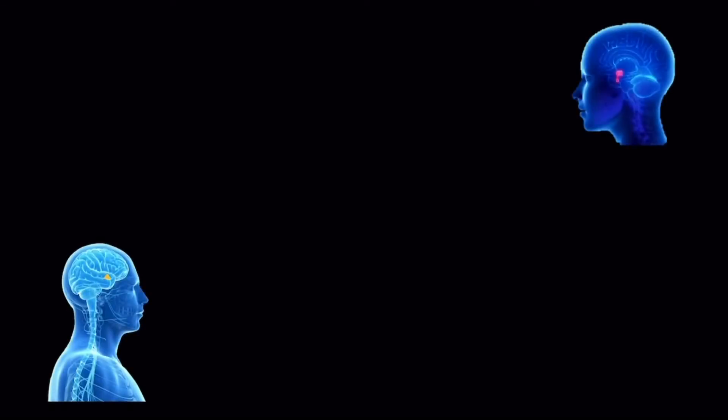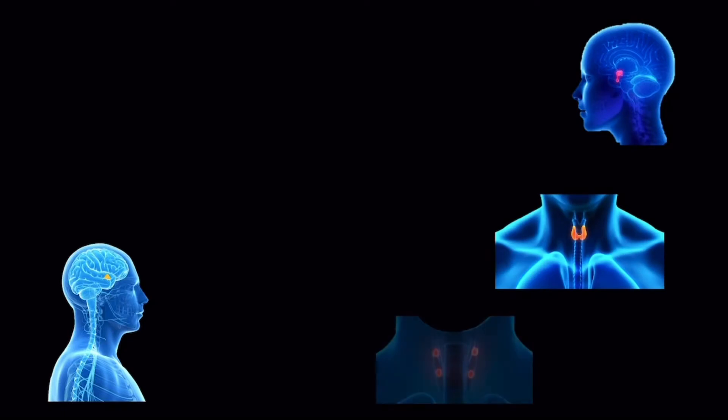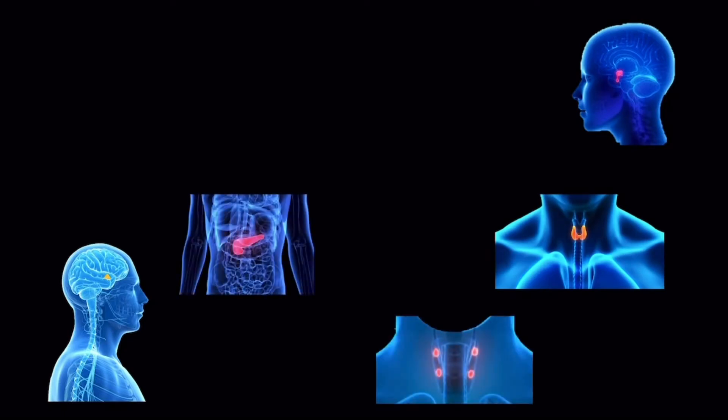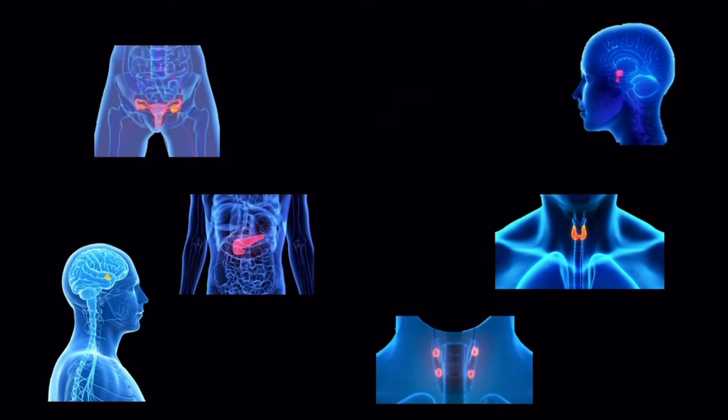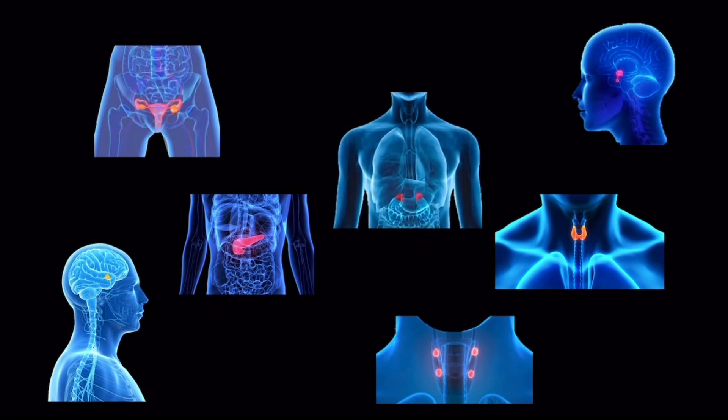The main hormone producing structures in the body are the hypothalamus, pituitary gland, thyroid gland, parathyroid glands, pancreas, gonads, and adrenal glands. There are other structures in the body that also produce hormones but I will hold off on listing them all here.